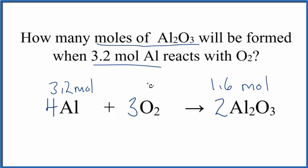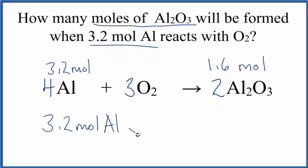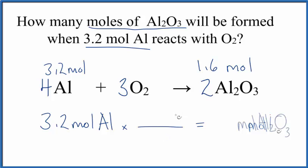We start with 3.2 moles of aluminum. We'll multiply that by a mole ratio, and we'll end up with moles of aluminum oxide. For the mole ratio, we want to cancel out these moles of aluminum, so we need moles of aluminum on the bottom and moles of aluminum oxide on the top.